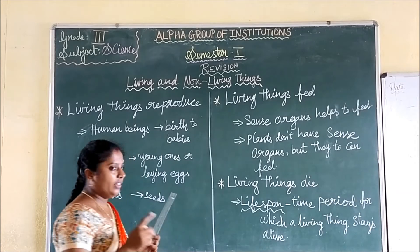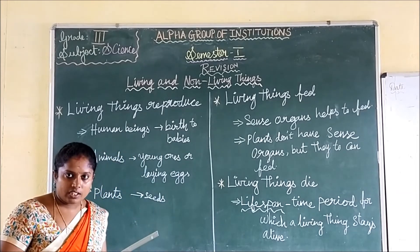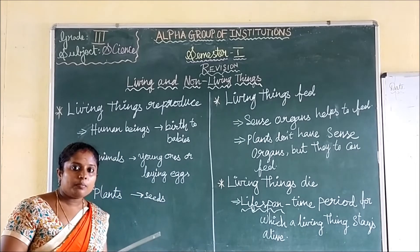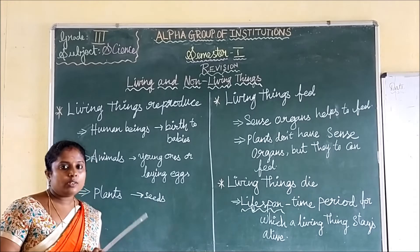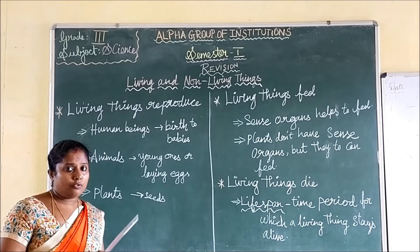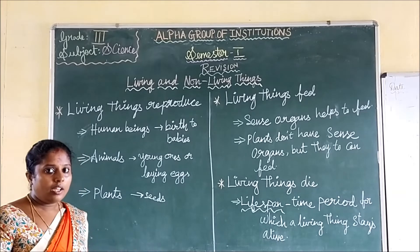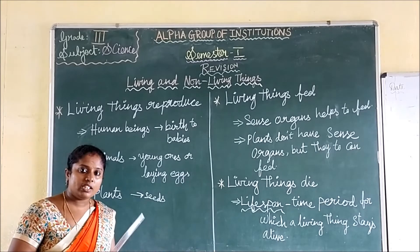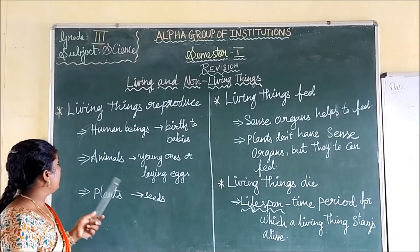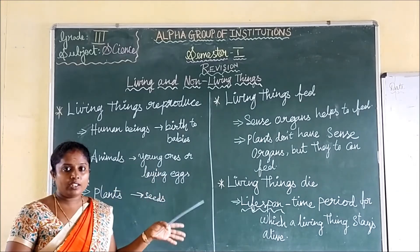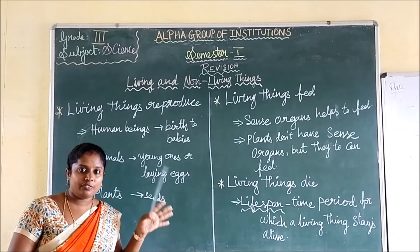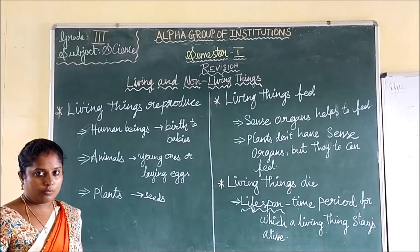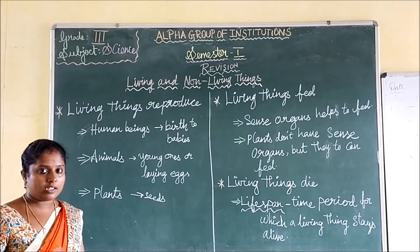So all living things can breathe, all living things can move, all living things need food and water to survive, all living things will reproduce, all living things will grow, and all living things can feel. These are the characteristics of living things. And now we will continue about natural and man-made things.